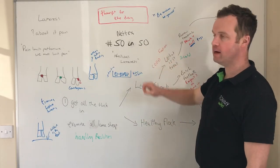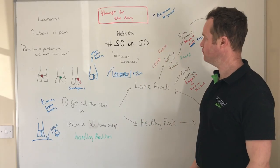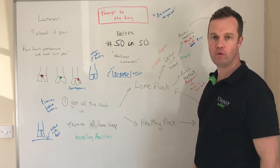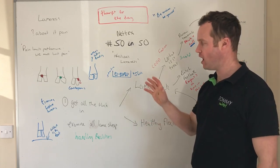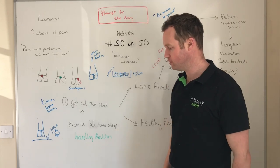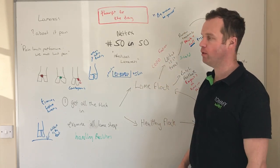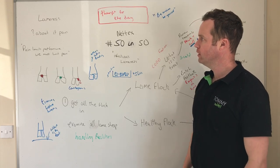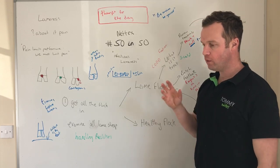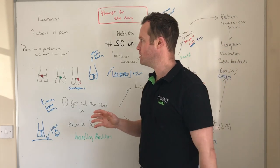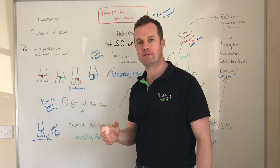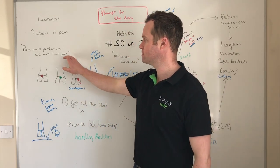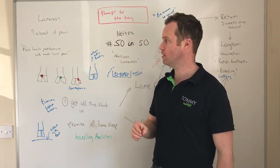50 vlogs in 50 days, and with the support of Norbrook we're getting into a vast range of topics in flocks, dairy, and beef. Today I'm going to talk about lameness in sheep and how to tackle and control it. When I think about lameness in cattle or sheep, I think about why it's an issue — it's about pain, and pain impacts performance.